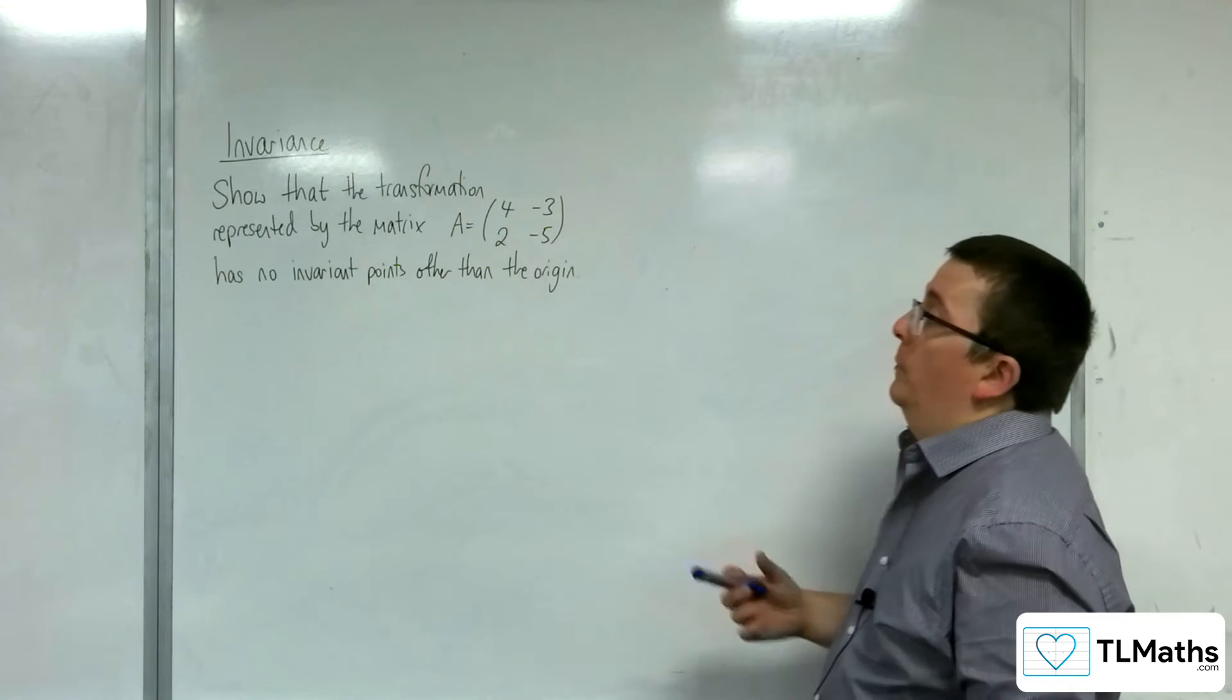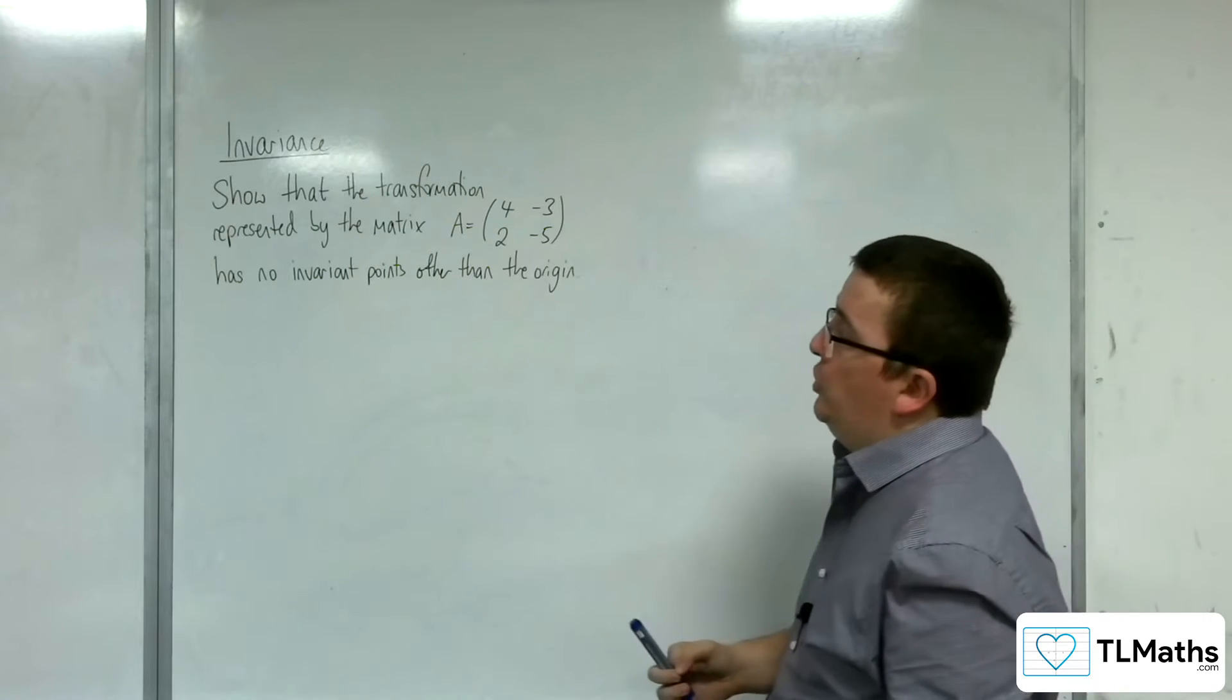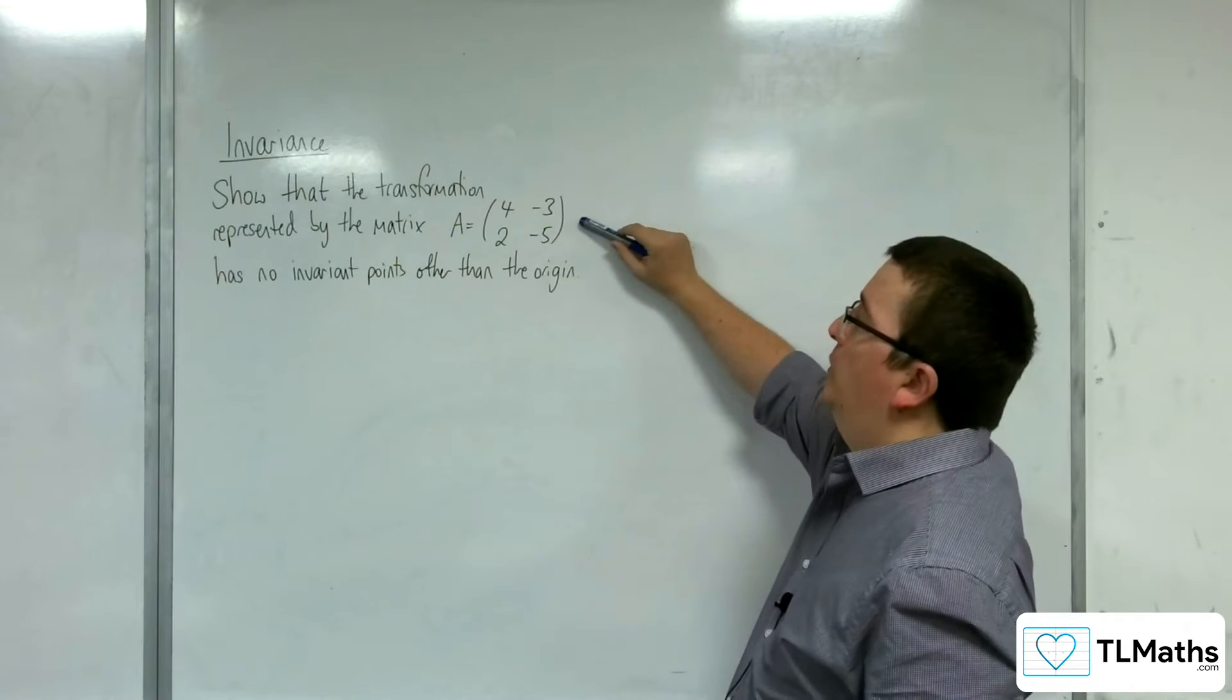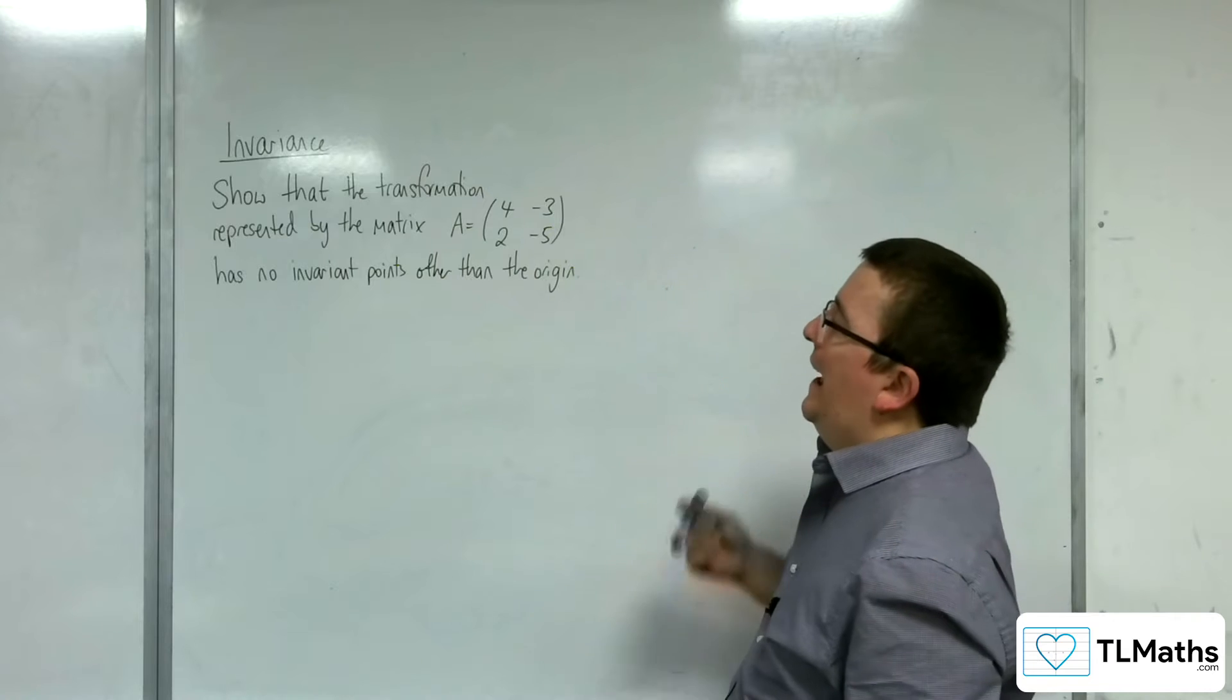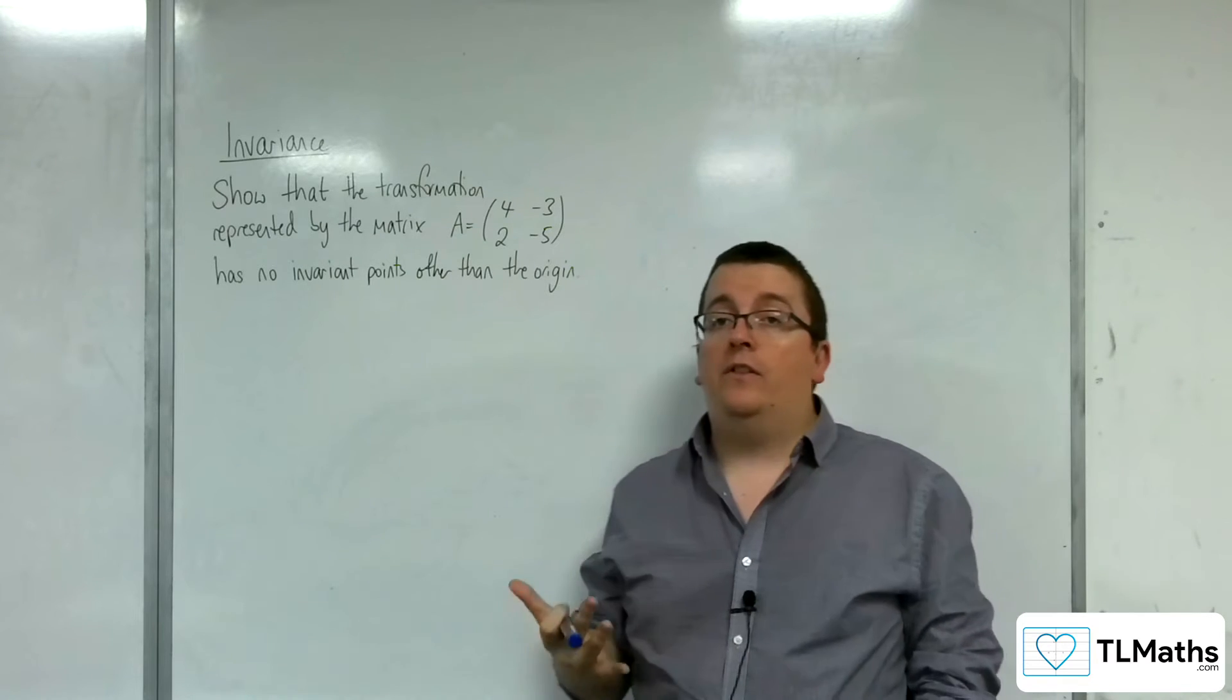In this video we're going to tackle this problem: show that the transformation represented by the matrix A, which is 4 minus 3, 2 minus 5, has no invariant points other than the origin.